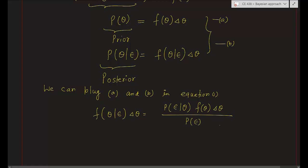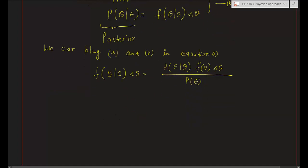Both sides have the delta theta term, so we can cancel it. We can then write: F(theta given epsilon) equals P(epsilon given theta) times F(theta) divided by P(epsilon).